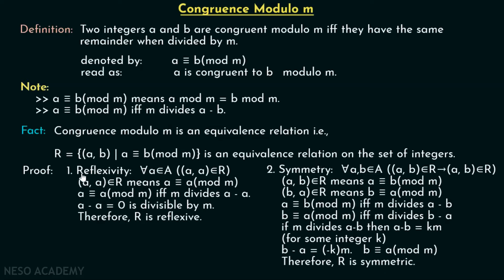First, we will apply the reflexive rule. That is, for all A belonging to the set, (A, A) must belong to R. This means A is congruent to A modulo M. A congruent to A modulo M means M divides A minus A. A minus A is zero, and zero is obviously divisible by M — it is divisible by any integer. Therefore, R is reflexive.